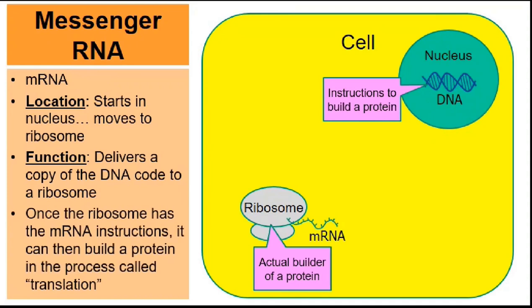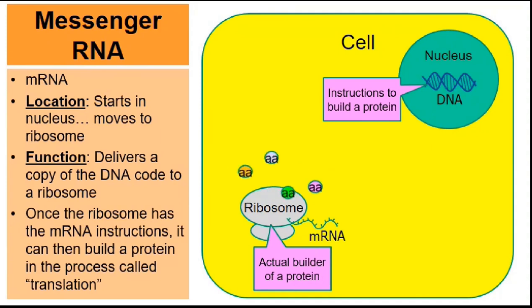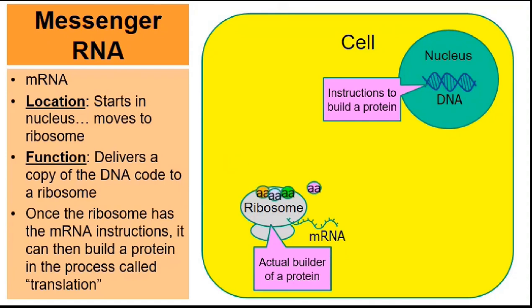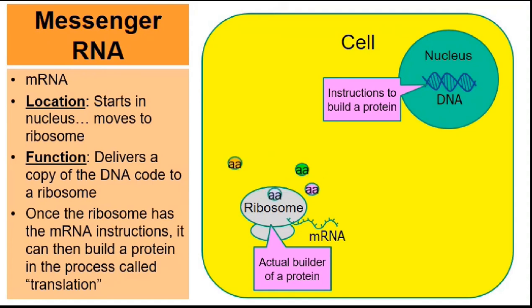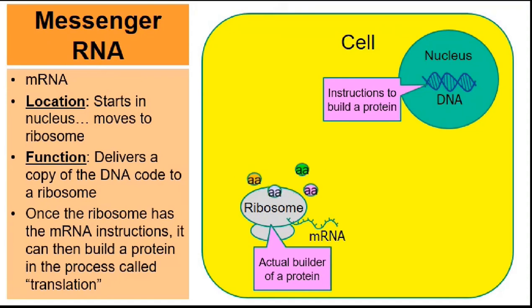So let's talk about mRNA first. The M of mRNA stands for messenger — messenger RNA. You're going to see it's going to start in the nucleus of a cell, but it will end up at a ribosome. Eukaryotic cells have a nucleus, and in that nucleus is the DNA of the cell.